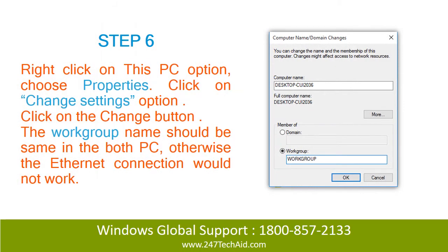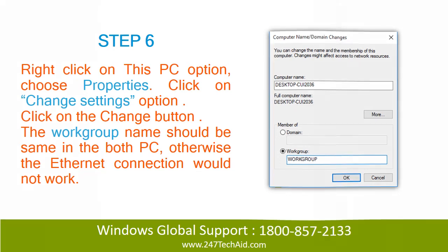Step 6. Right-click on This PC and choose Properties. Click on Change Settings, then click the Change button. The workgroup name should be the same on both PCs, otherwise the Ethernet connection will not work.